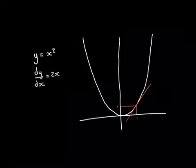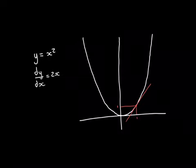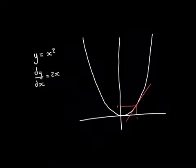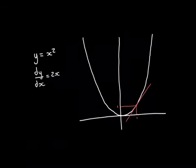Let's take a specific example: the point x equals 1. Of course the value of the function x squared at x equals 1 is also equal to 1. Let's now try to work out what the gradient of the tangent line to the curve at x equals 1 is.